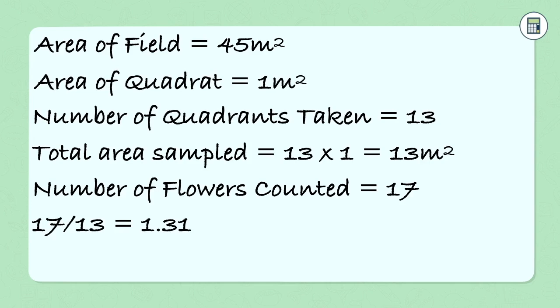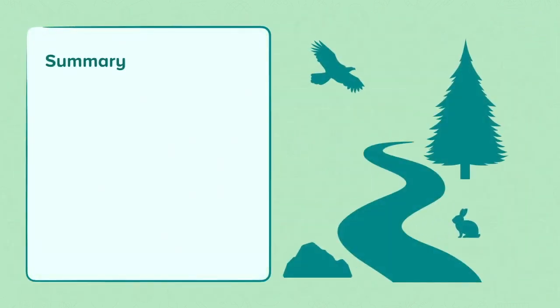17 divided by 13 gives us 1.31. If the area of the field is 45, then 1.31 multiplied by 45 will give us an estimate for the number of purple flowers that are in the field. 58.95 is much closer to the true value of 59. This makes it more accurate than our previous estimate.